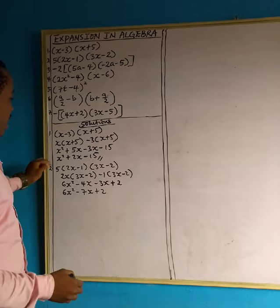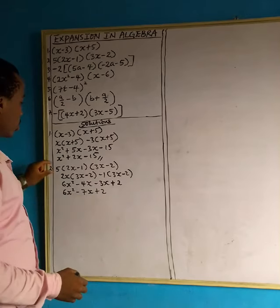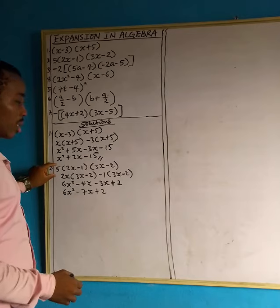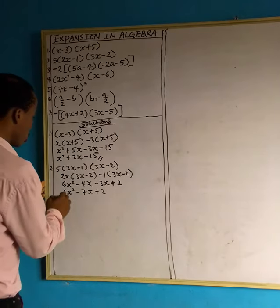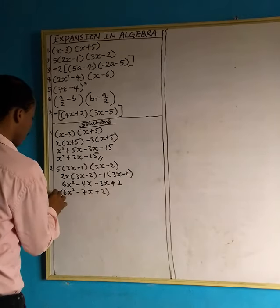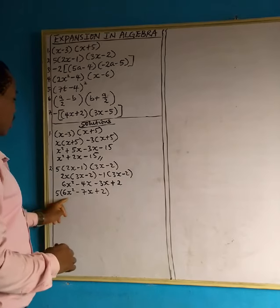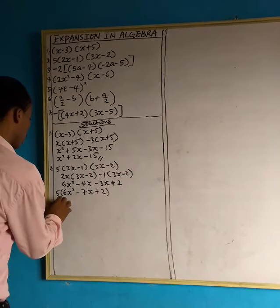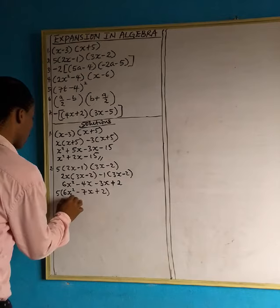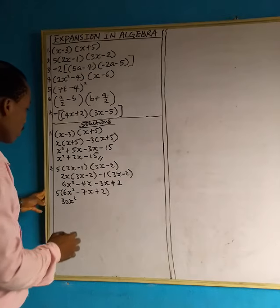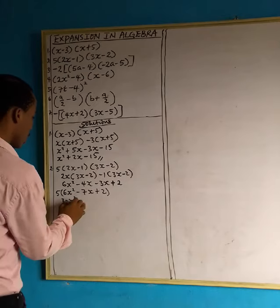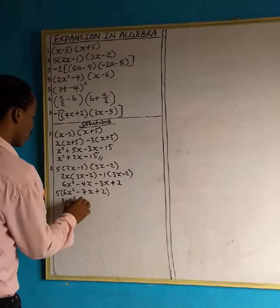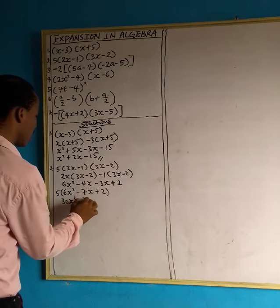But we are not done yet — we still have the 5 from the beginning. So we are going to multiply our answer by 5. Multiplying by 5: 5 multiplied by 6x squared gives us 30x squared. 5 multiplied by minus 7x gives us minus 35x.